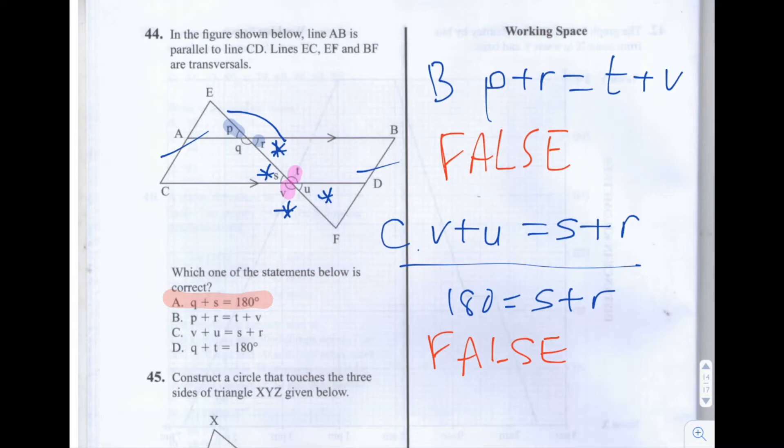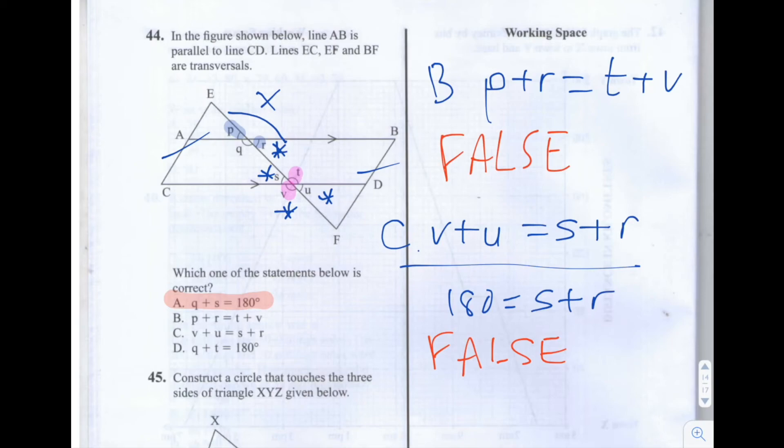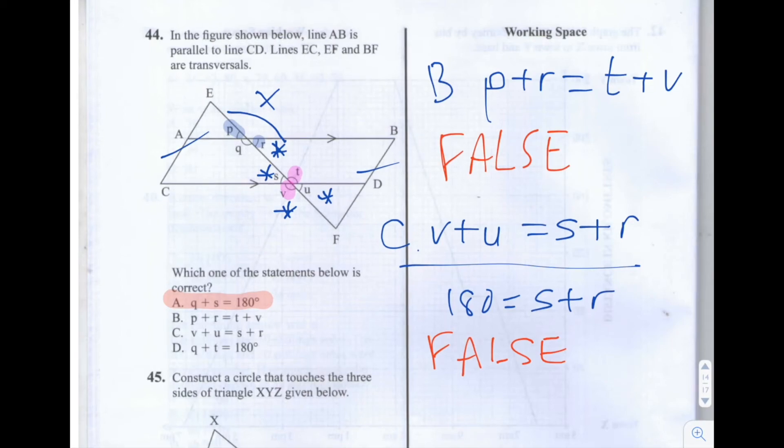Lastly, we have D, which is Q plus T is equal to 180. So Q, as we said before, is vertically opposite to an unnamed angle. I'm just going to call that angle X for now. And X, according to the F angle rule is the same as T. That means that Q is also equal to T. And as we talked before, EF is not perpendicular to AB and CD. That means that Q and T are not both 90 degrees, which means that D is also false.